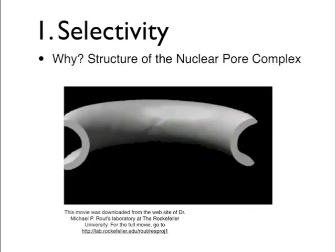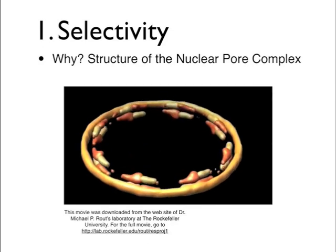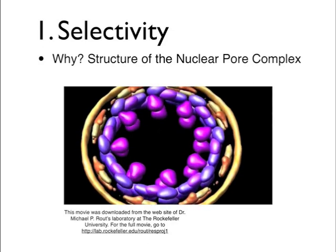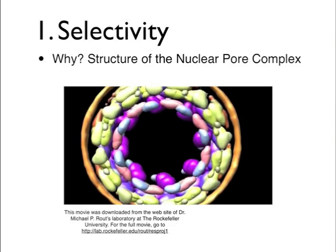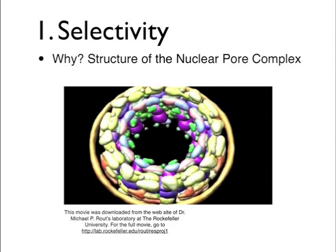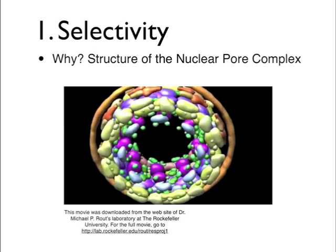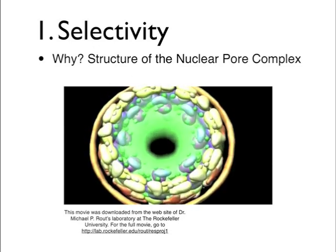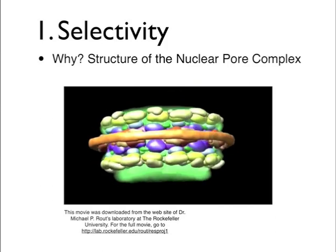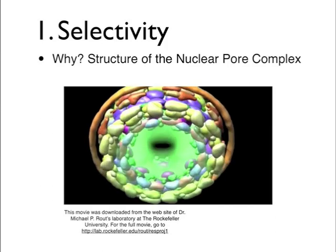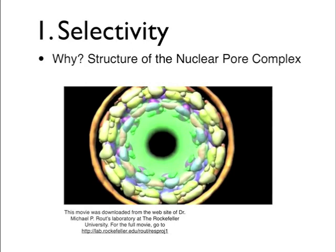In order to understand the selectivity of the nuclear pore complex, it's a good idea to take a look at its structure. The nuclear pore complex is formed by three rings of proteins associated to the nuclear envelope. Those rings hold the nuclear pore complex in place and act as a linker to another array of proteins located toward the central part of the nuclear pore complex.